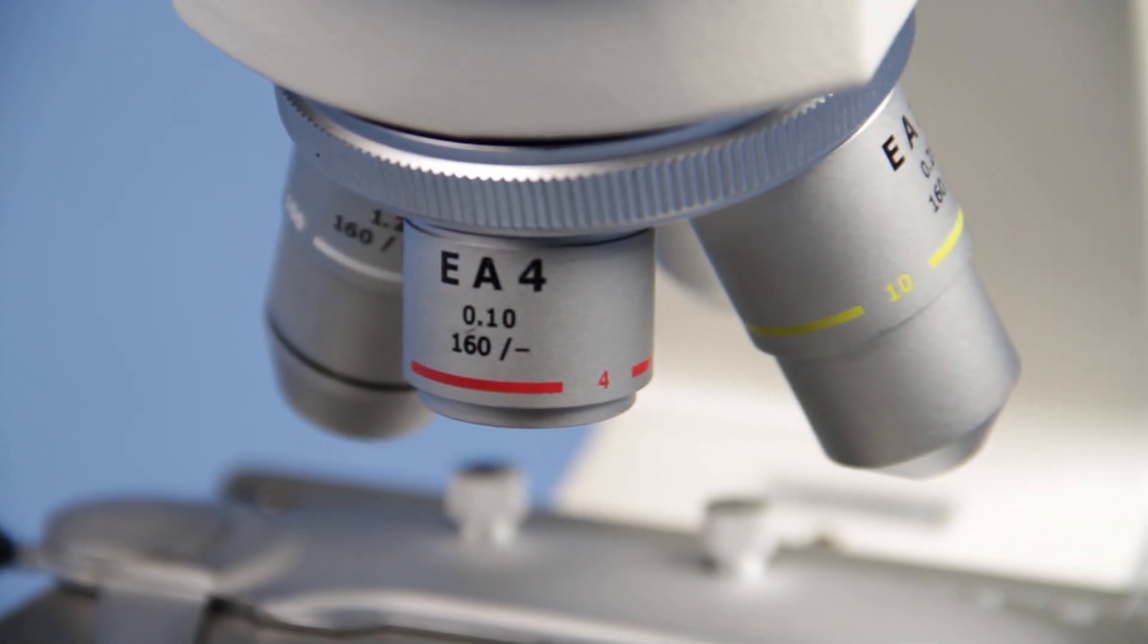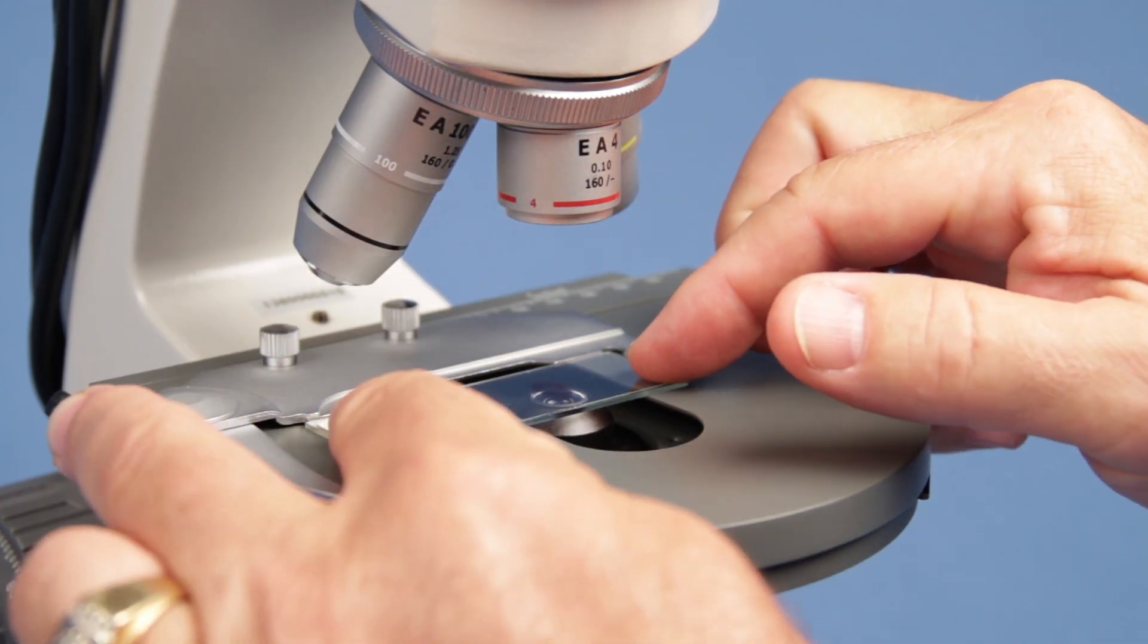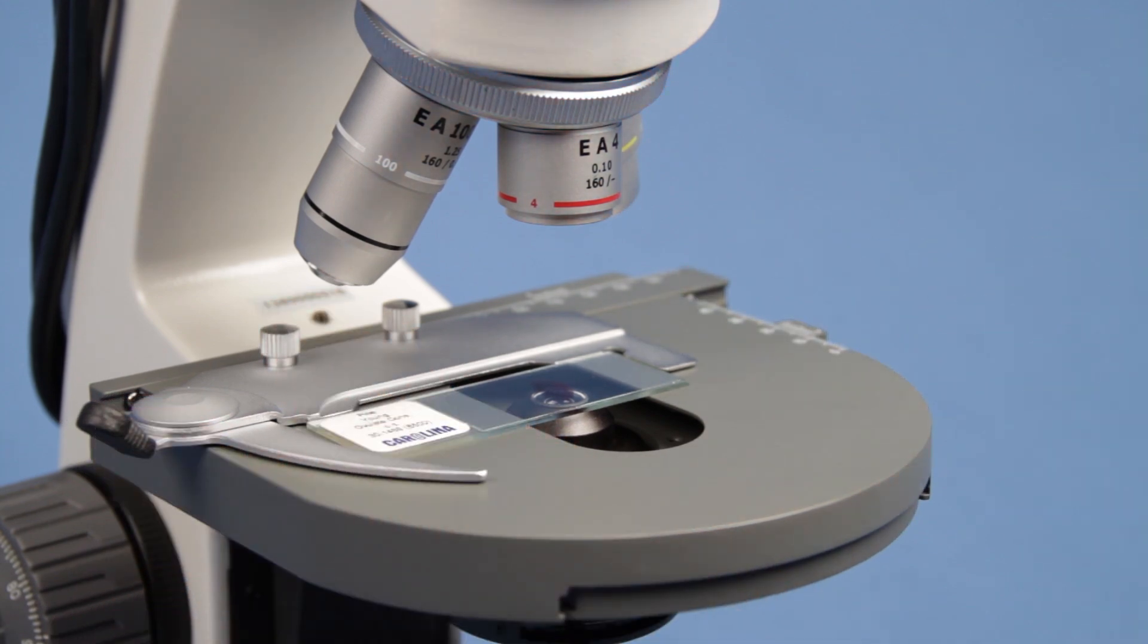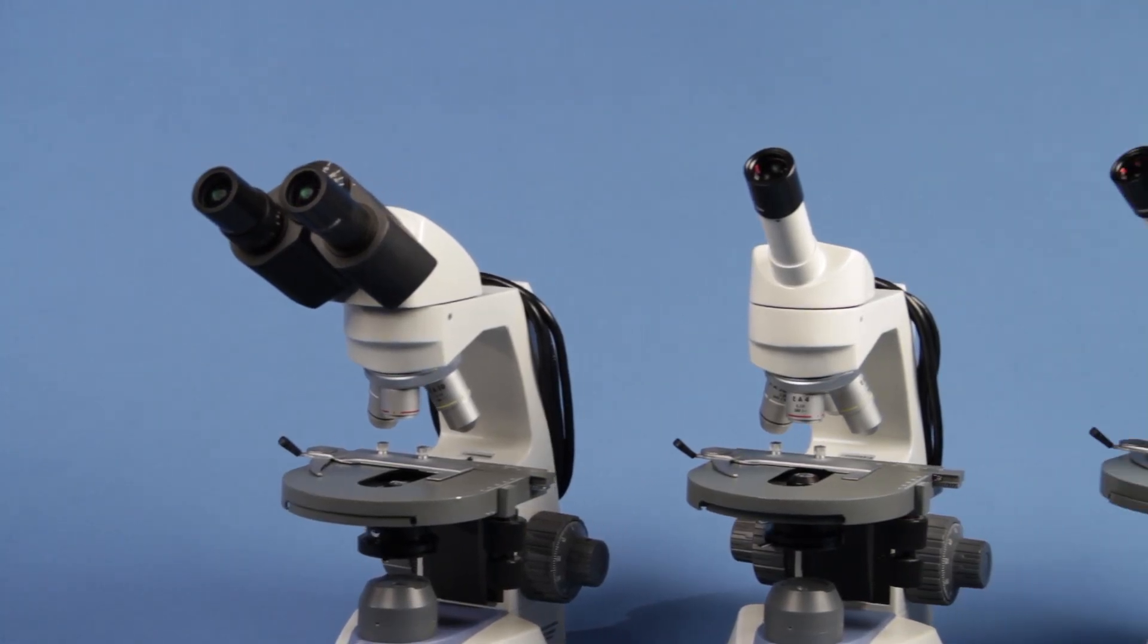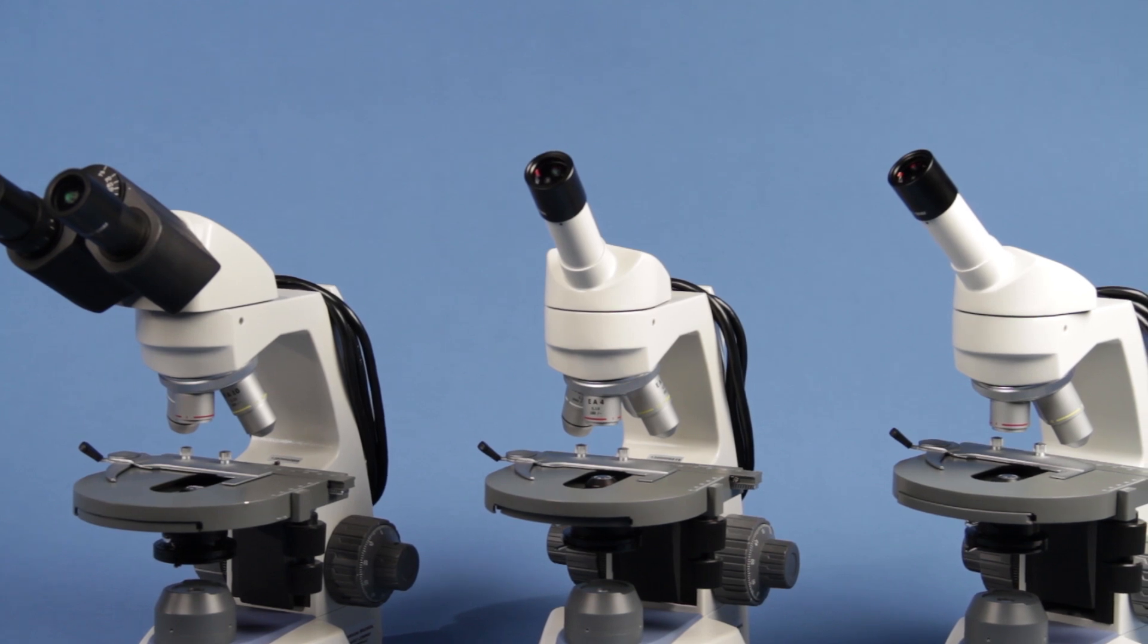Advanced EA Achromatic Objectives provide superb optical quality with excellent color reproduction, contrast, and field flatness. A reverse mounted quadruple nose piece positions the objectives away from the user for easier slide placement and manipulation.